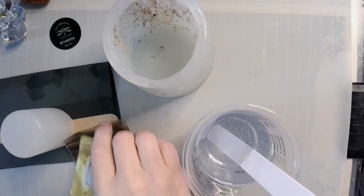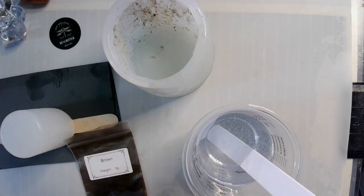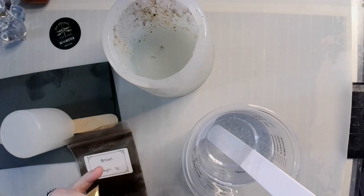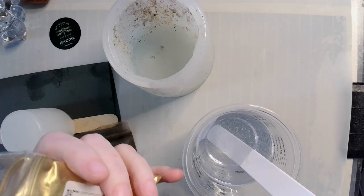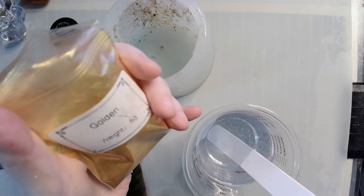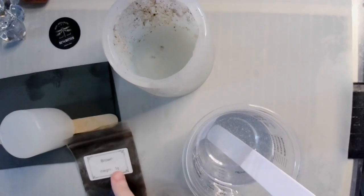Here we have six ounces of fully cured one-to-one epoxy resin, and I'm going to be adding two colors of mica powder. Both are from HDB - one is golden and the other is brown.